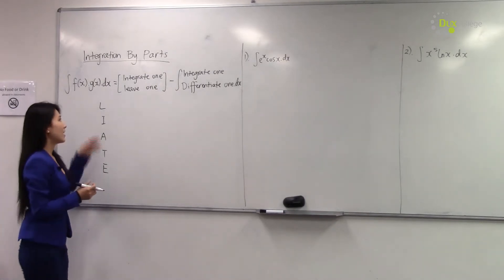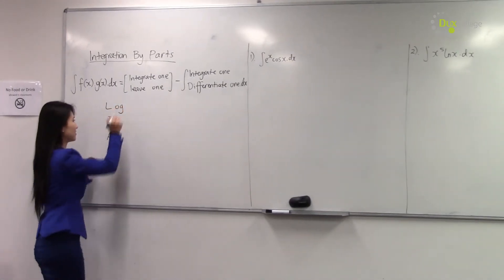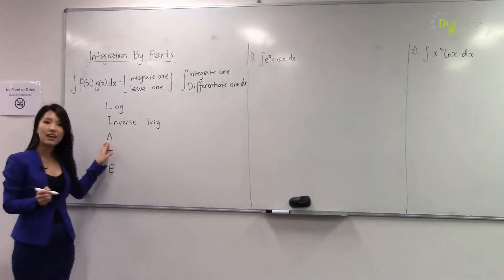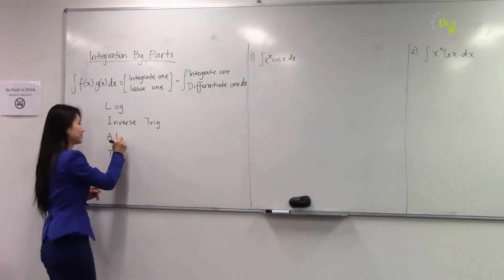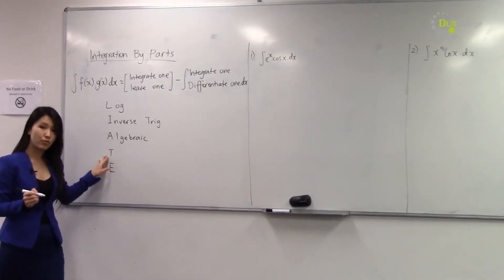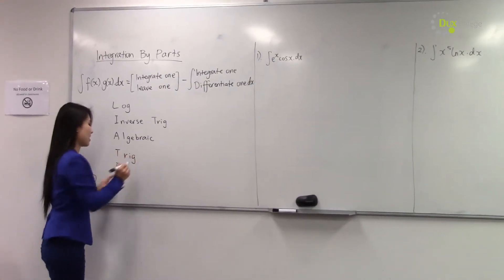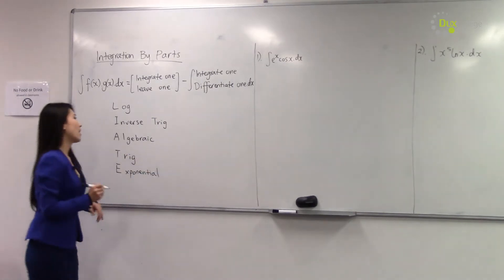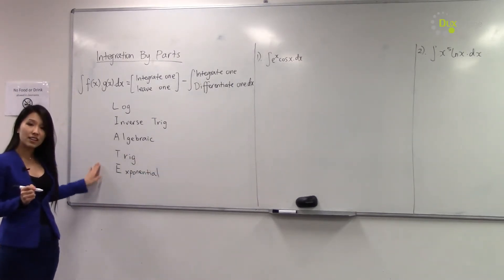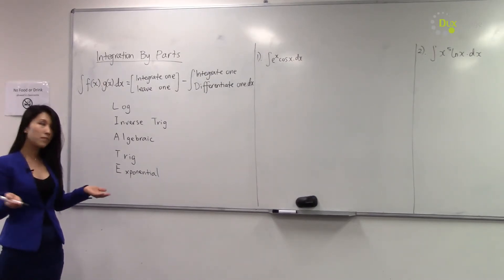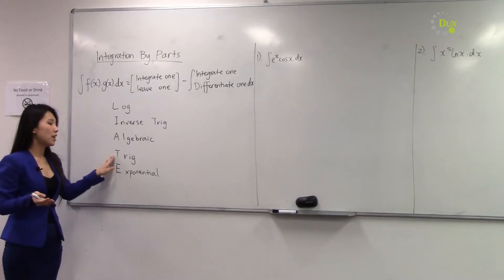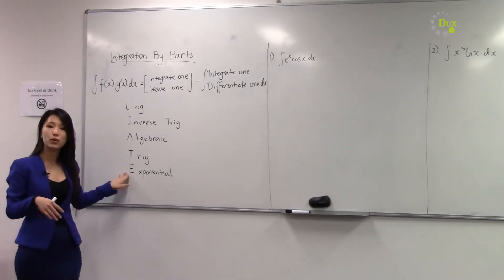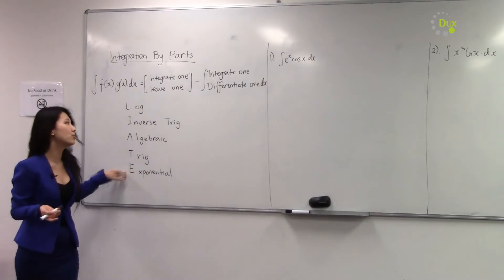What does LIATE stand for? L stands for log, I stands for inverse trig, A stands for algebraic function, T stands for trig functions, and E stands for exponential. As you go down the list, it becomes more and more preferable to integrate. For example, if we have log multiplied by a trig function, we would prefer to integrate trig rather than log. If we have inverse trig combined with exponential, we would prefer to integrate exponential rather than inverse trig.